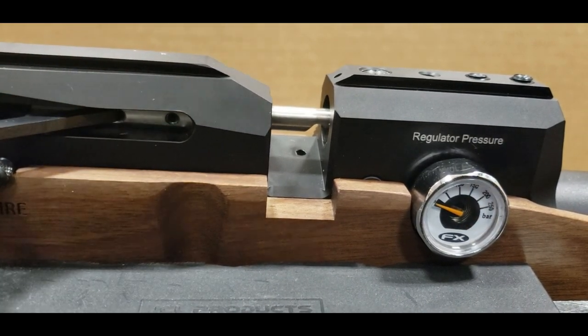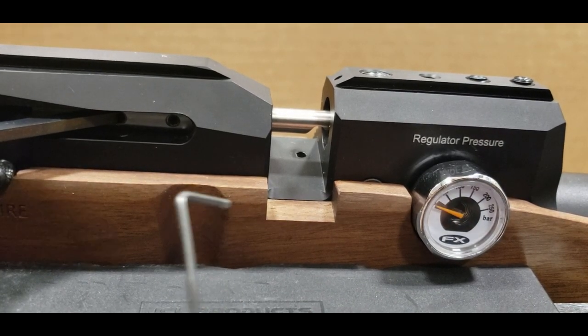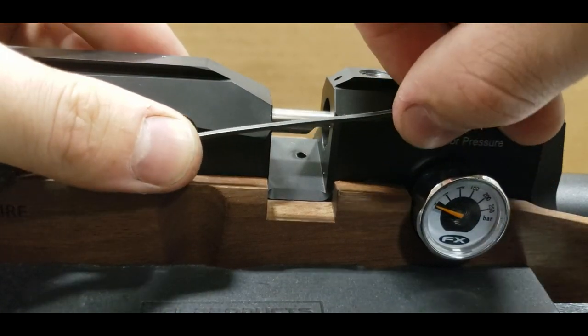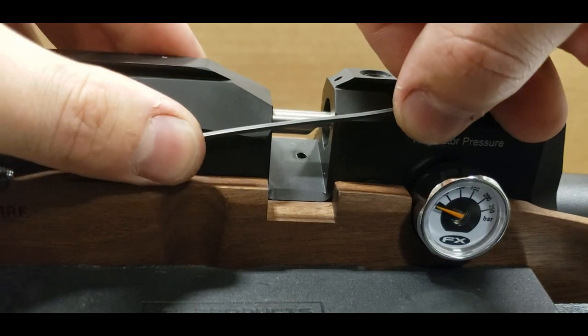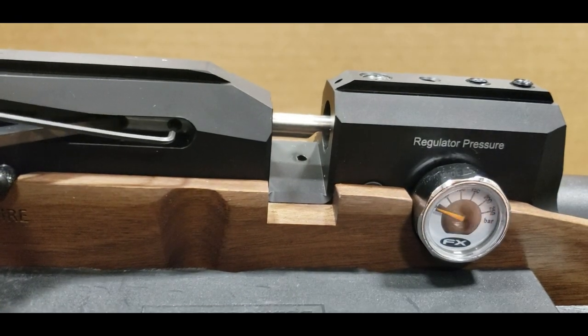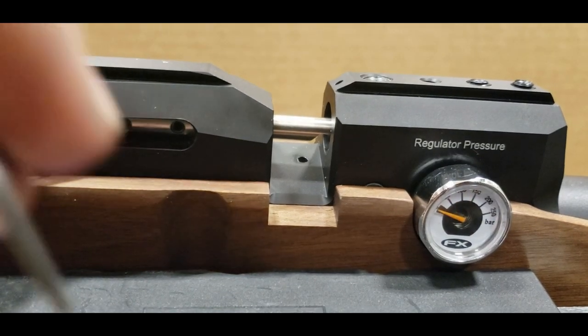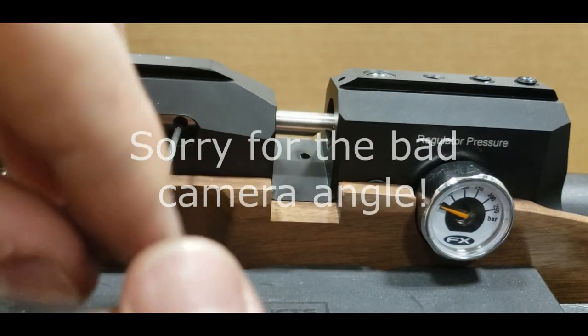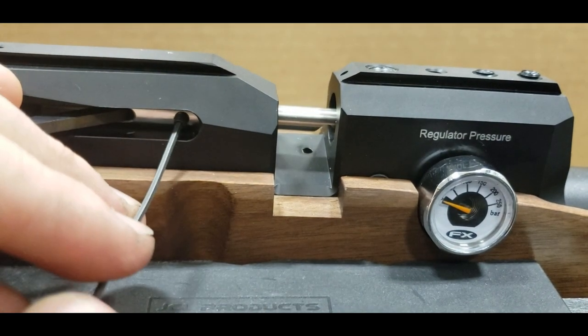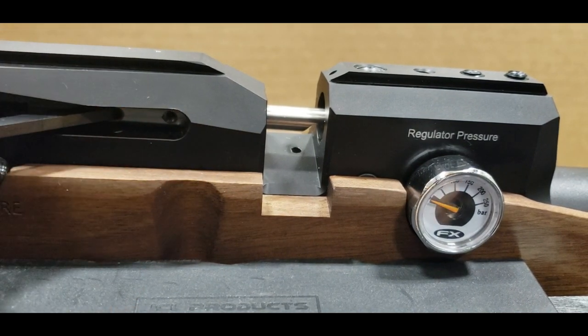Then you're going to take a 1.5 millimeter Allen. I've got a very small one here. Make sure it's in the hole and turn it counterclockwise. There might be a small amount of Loctite on there, so just be sure not to strip it out. Alright, and there we go. There's your pellet probe screw.